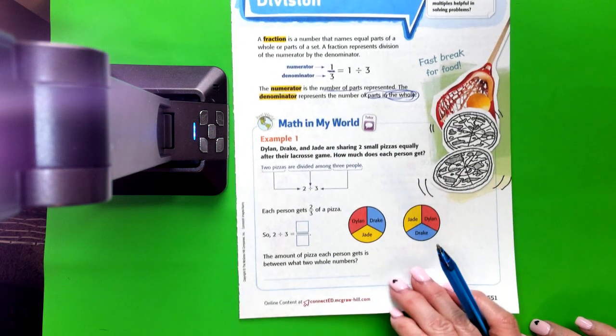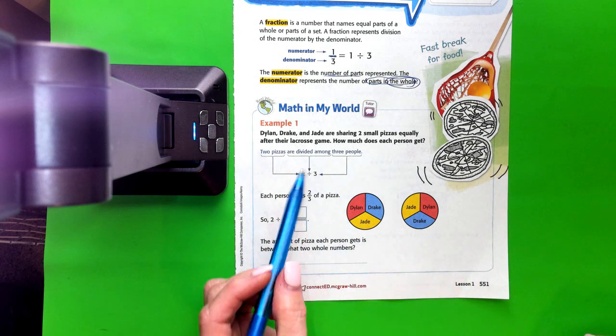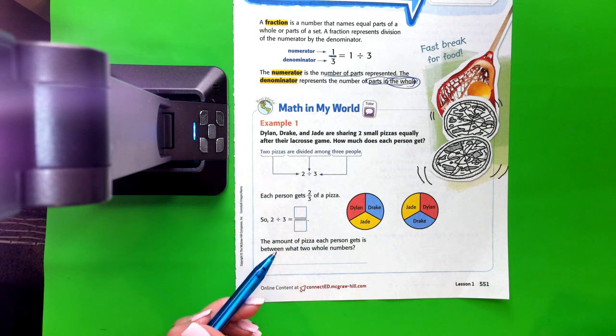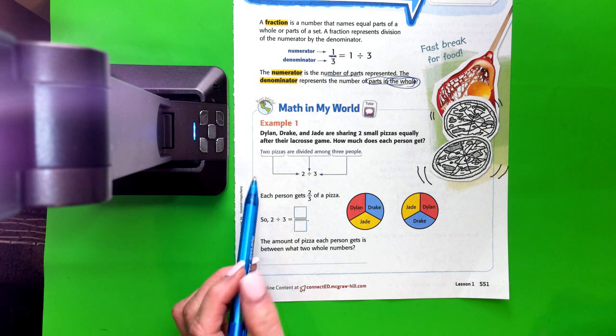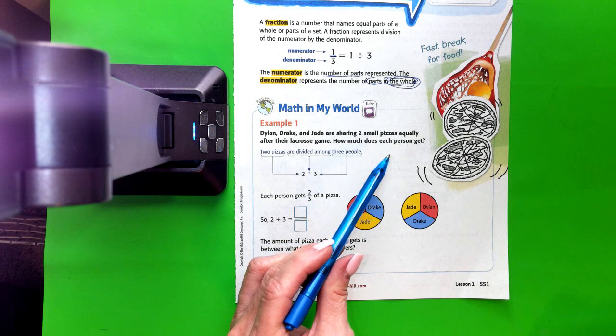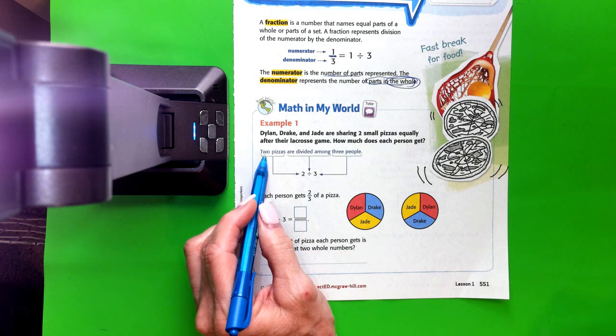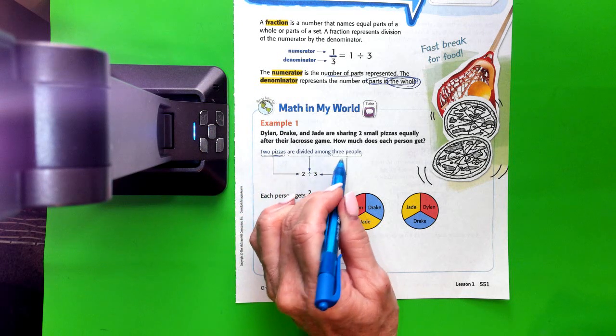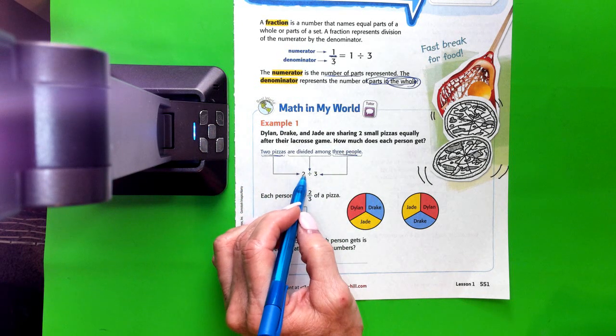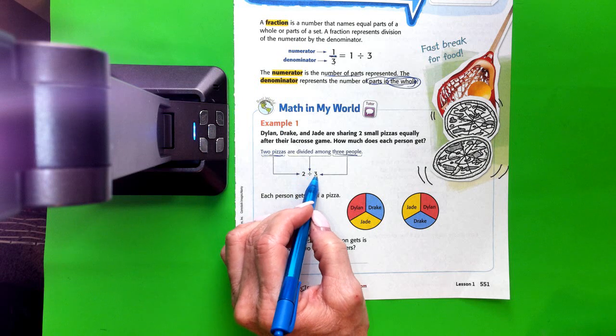Let's look at our first example. Dylan, Drake and Jade are sharing two small pizzas equally after their lacrosse game. How much does each person get? So we're dividing two pizzas amongst three people. That's 2 divided by 3.